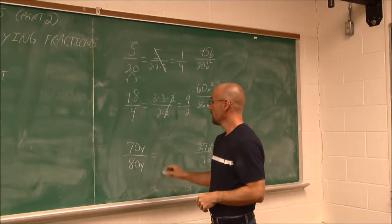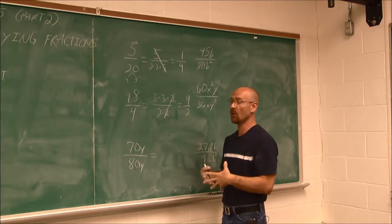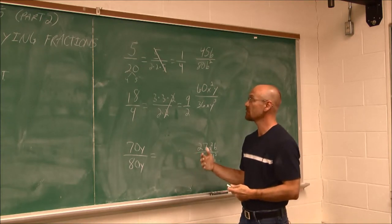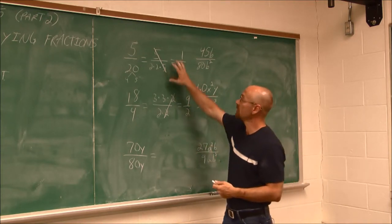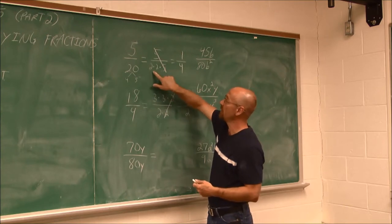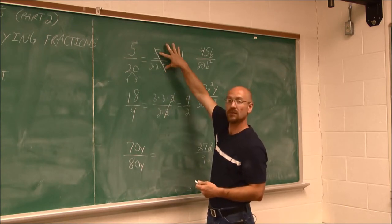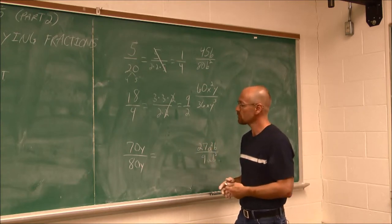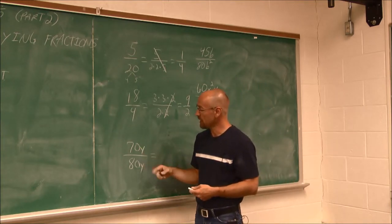What about this one here? Sometimes we don't have to take it all the way down to its prime factors. Maybe we'd recognize something cancels right away. If we look at this, we took this all the way down to its prime factors and then canceled. But what if we see something that cancels before we get all the way down to the primes?